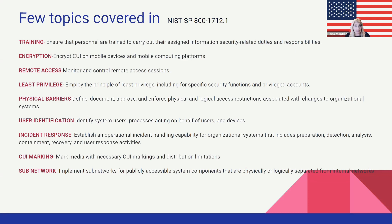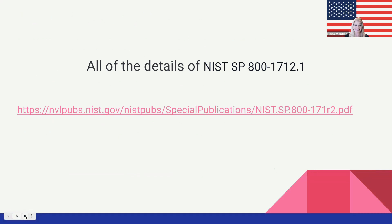User identification — does everybody have their own unique login, and can you tell when they're in the system? An incident response plan is really important: if something happened or someone suspected something might be happening, would they know what to do, who to contact, and what to say to the public? CUI — whether on a computer or printed out on paper, is it marked correctly? And your subnetwork — do you have a separate network for guests so that anyone who shouldn't have access to your private information can still get on the internet?